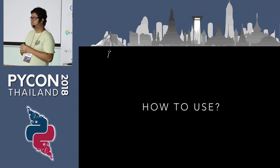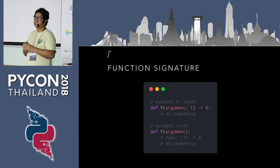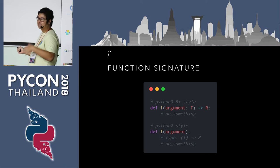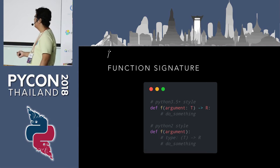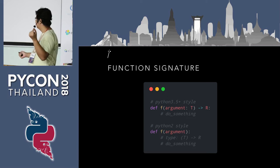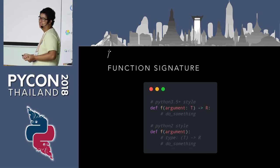Now for part two: how to use type annotations. The most common way is in the function signature. In function f, you add a colon after the argument name followed by the type, and for the return type you add a little arrow and the return type. For Python 2, which doesn't support this syntax natively like Python 3.5+, you can write the types in comments and the type checker will read and validate them. Some big companies, like Dropbox, still have a large Python 2 codebase and use this comment style.